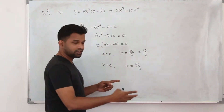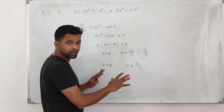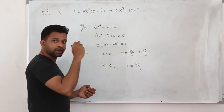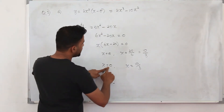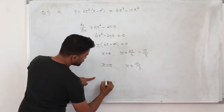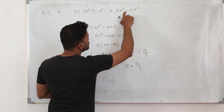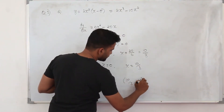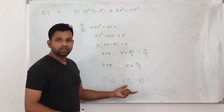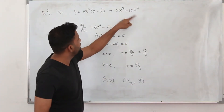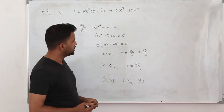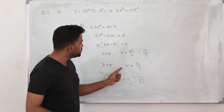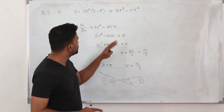If they want the exact coordinates, substitute x equals 0 — your first point will be (0, 0). Then substitute x equals 10/3 and simplify using a calculator to get the second point. But in this question they want only the x-coordinates. You have two x-coordinates and 4 easy marks.